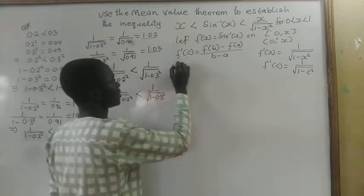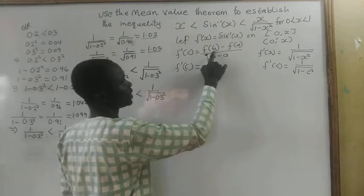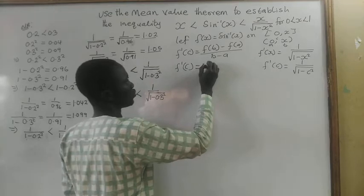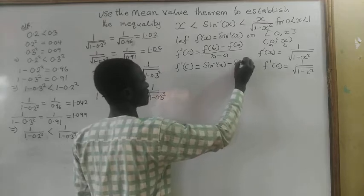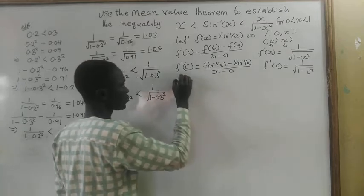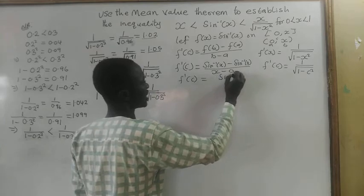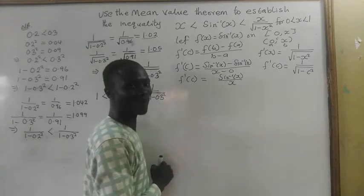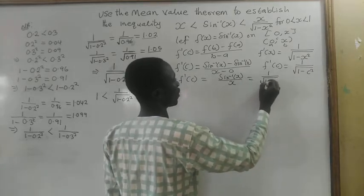Let's come back here. f prime of c is also equal to f of b minus f of a over b minus a, where a is 0 and b is x. So we have sin inverse of x minus sin inverse of 0, all divided by x minus 0. So f prime of c equals sin inverse of x divided by x, which is the same as 1 divided by the square root of 1 minus c squared.